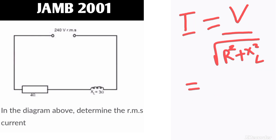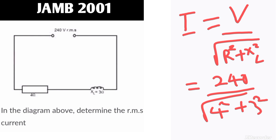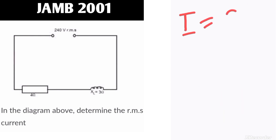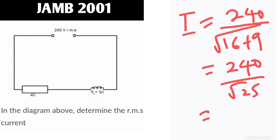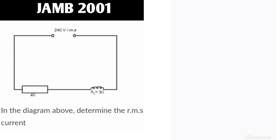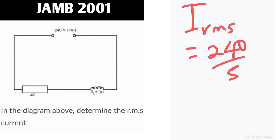Substituting: i_rms = 240 / √(4² + 3²) = 240 / √(16 + 9) = 240 / √25 = 240 / 5. The RMS value of the current is 48 amperes.